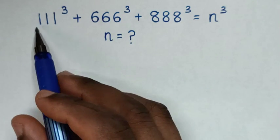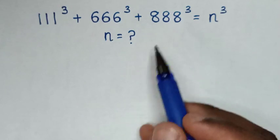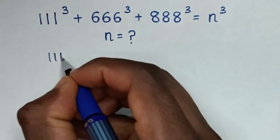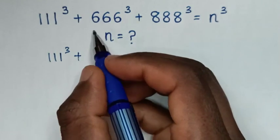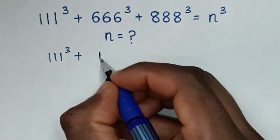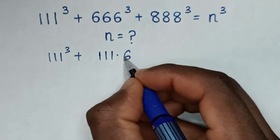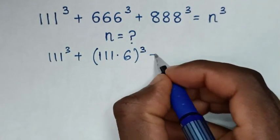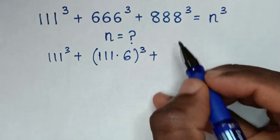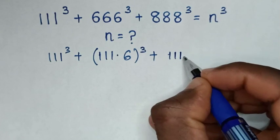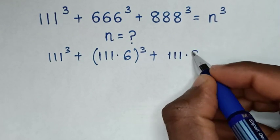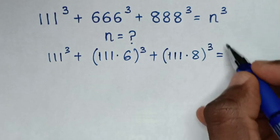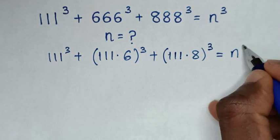So from here 111 is common. Then it will be 111 power of 3 plus 666, which is the same as 111 times 6, bracket power of 3, plus 888, which is the same as 111 times 8, bracket power of 3, is equal to n power of 3.